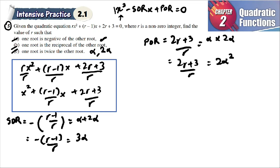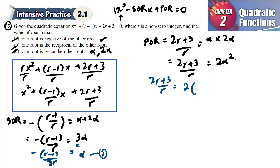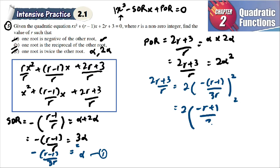We use substitution. From the sum of roots equation, alpha = −(r−1)/(3r). The product of roots gives (2r+3)/r = 2alpha². Substituting alpha: (2r+3)/r = 2 · [−(r−1)/(3r)]², which simplifies to 2 · (1−r)²/(9r²).